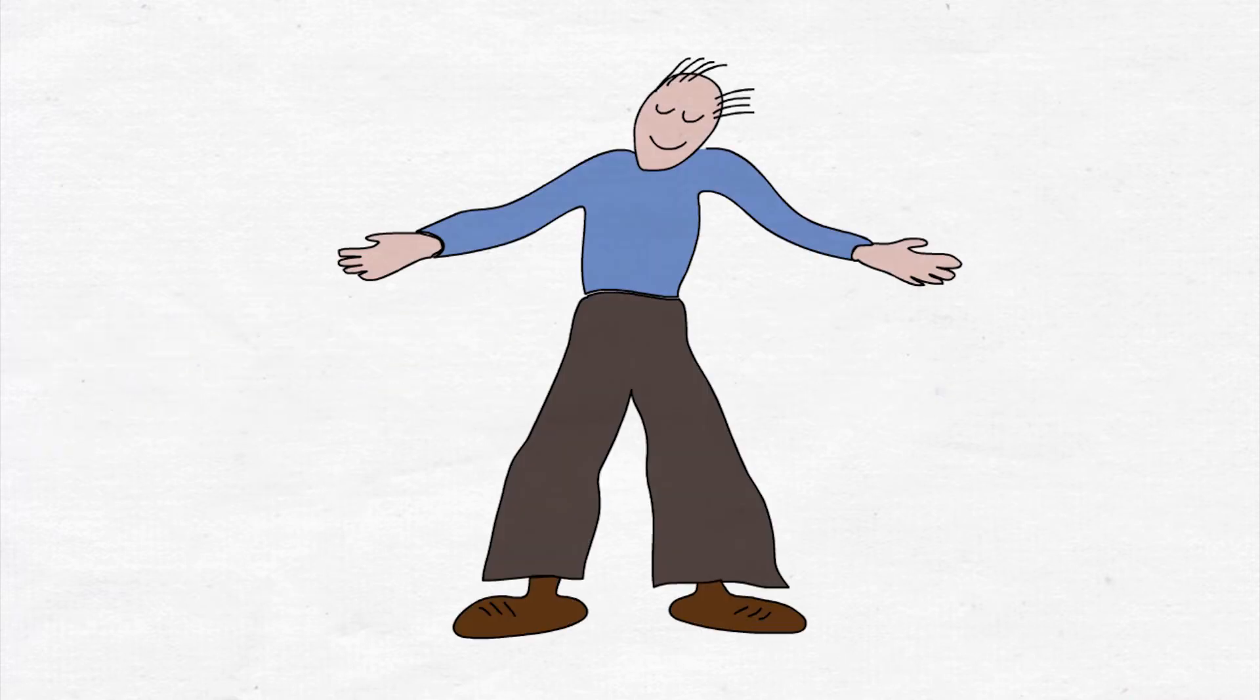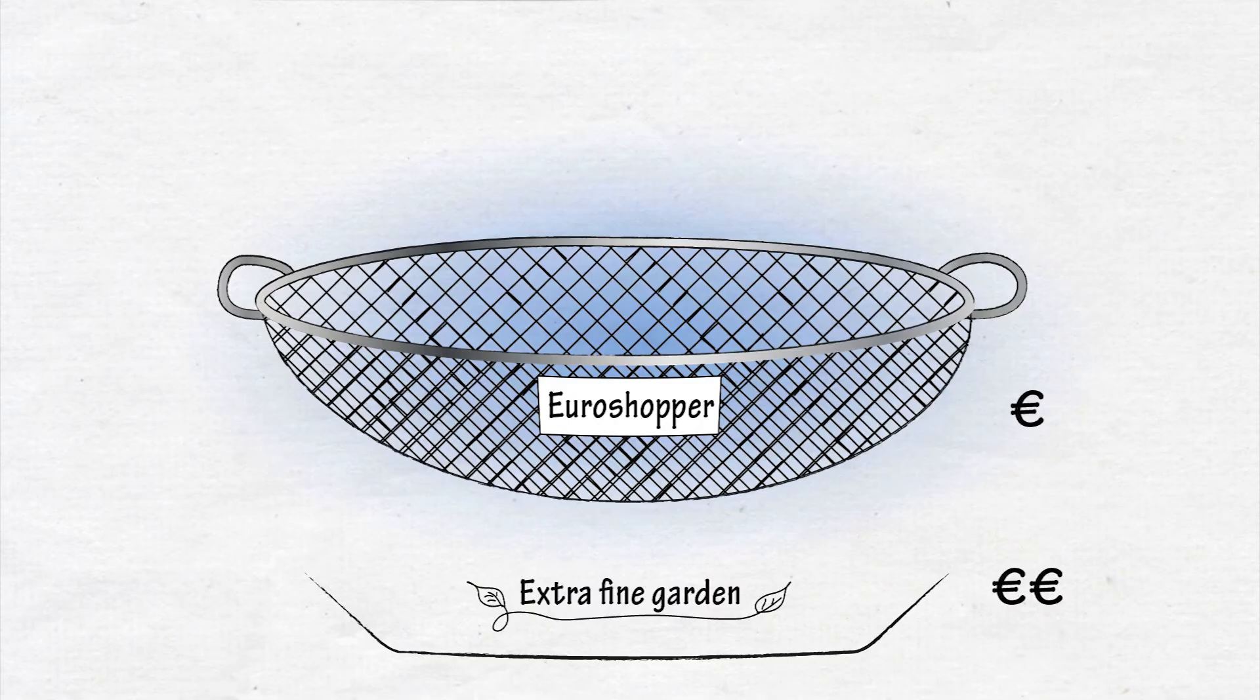Well, suppose you are a farmer growing peas. When you harvest the peas, you have large ones which will end up as cheap Euro shopper peas, and the small ones which can be sold as more expensive extra fine garden peas. So you pass them through a sieve in order to separate them. The extra fine garden peas will fall through. The Euro shopper peas will stay on top.